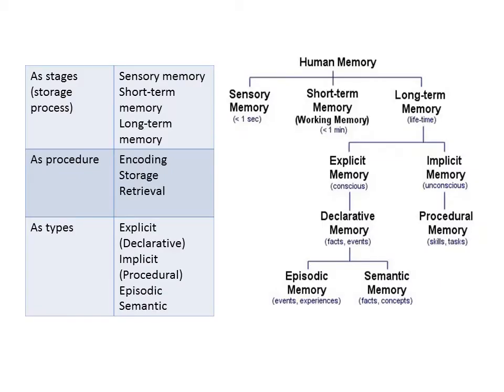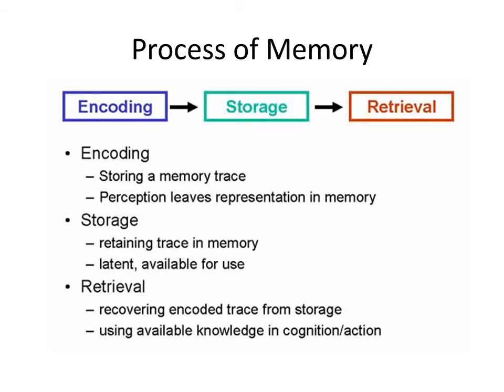In psychology, memory has stages, a procedure, and types. Memory as stages refers to three main stages: sensory memory, short-term or working memory, and long-term memory. The procedure refers to encode, store, and retrieve. And when we talk about types, there are two main types: explicit and implicit memory. Explicit memory is further divided into two types: episodic and semantic. We will be describing and explaining these terms later on.